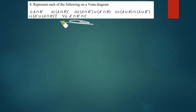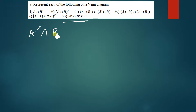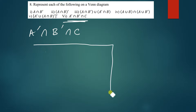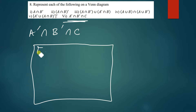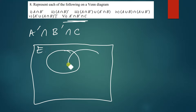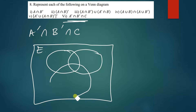Moving on to the last part of the question: we have A complement intersection B complement intersection C.